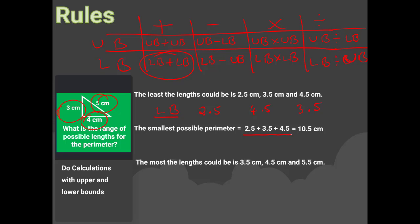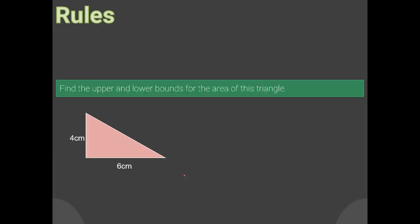The most possible lengths (upper bounds) are found by adding 0.5 to each lower bound: 3.5, 4.5, and 5.5. Adding all the upper bounds together gives the largest possible perimeter: 3.5 + 4.5 + 5.5 = 13.5 centimetres.